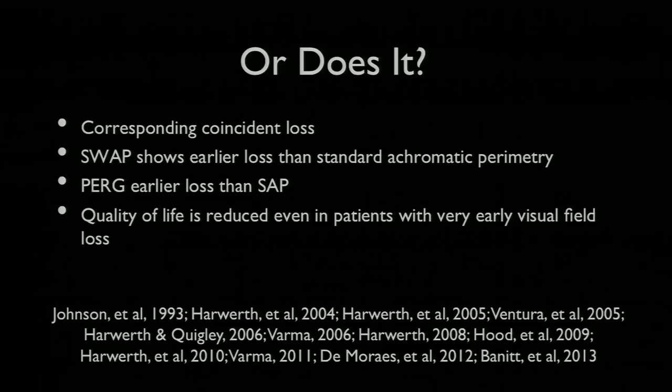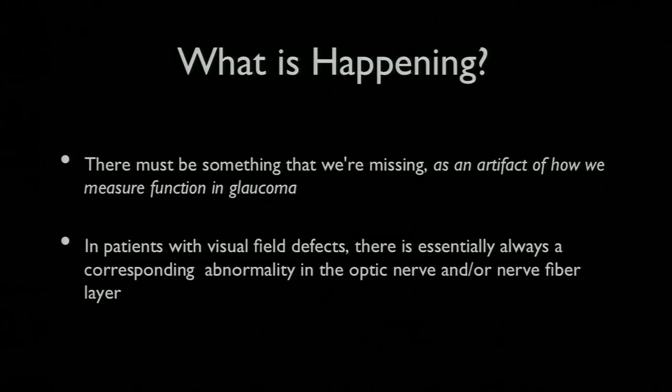Well, we heard the reports from Harworth's paper from Felipe Medeiros and from others who showed that, in fact, the change can be coincident between the loss of retinal ganglion cells and the loss of visual function. And we know that SWAP shows earlier changes than are detectable by standard achromatic perimetry. And we also know that even in very early glaucoma, people report a reduced quality of life, as we heard from Jack Chaffee.